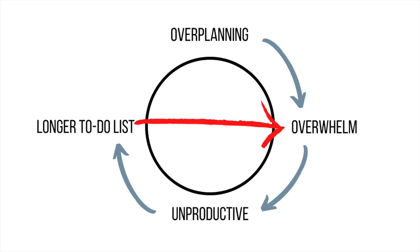We end up in this negative planning loop of not getting things done, feeling bad, feeling guilty, and continuing to have these extremely long to-do lists. My goal is to help you get out of this negative planning loop and start setting priorities and effectively planning your day. It's going to take 10 to 15 minutes each day or each night, but it will make a huge impact on your productivity.